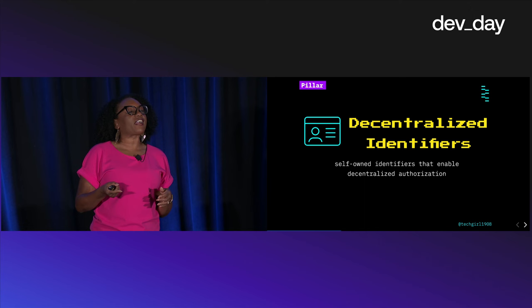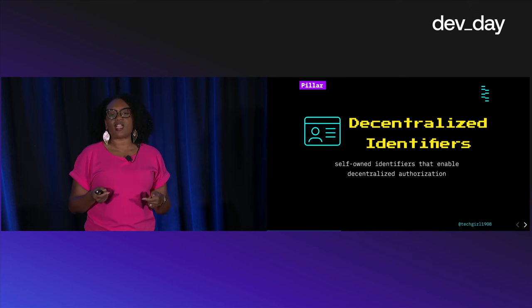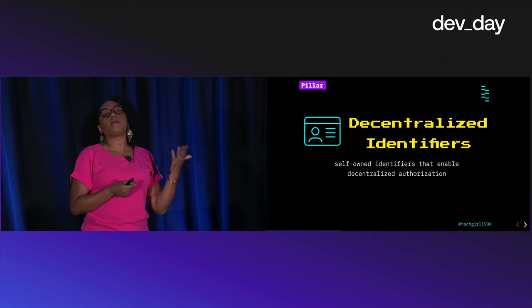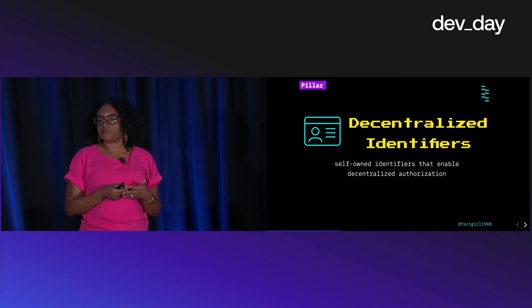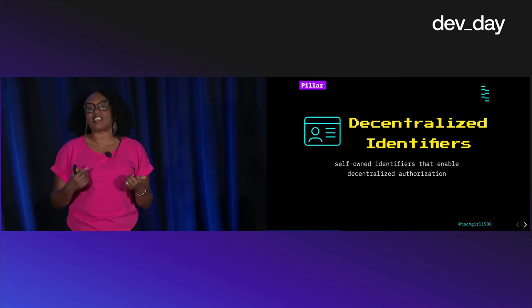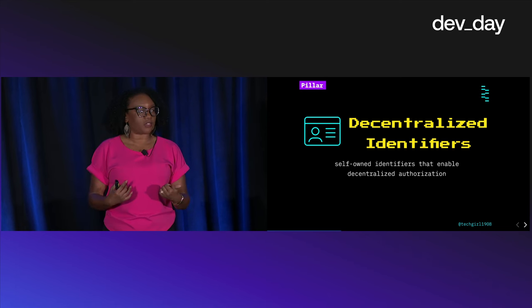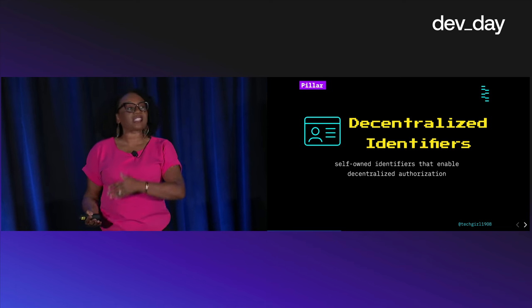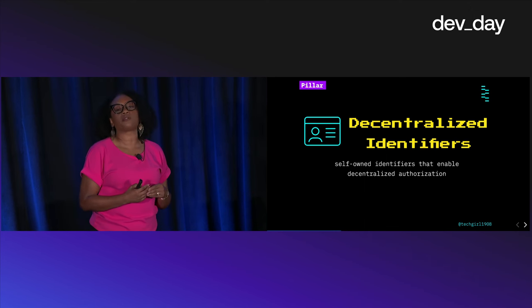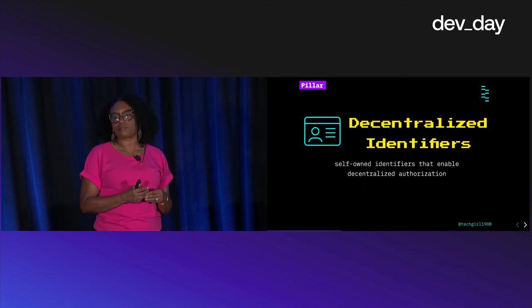The identifiers that we know and use today are controlled by some intermediary, whether that be the government, a company, or an organization. For example, my email address is an identifier that's associated with me. Much like Alice, I use my email address across the web to authenticate and identify myself.